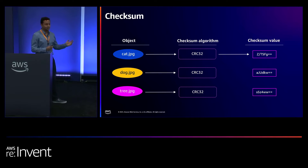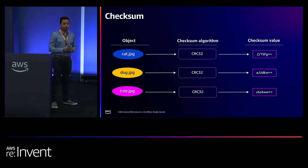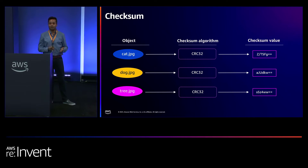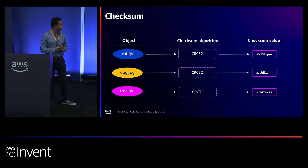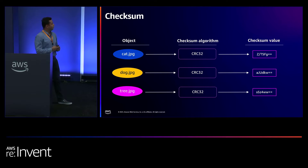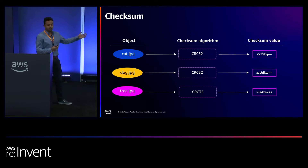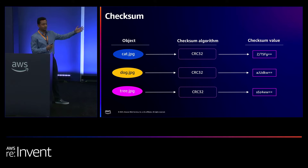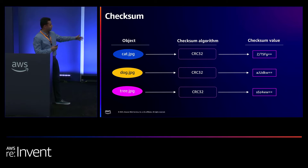What is a checksum? A checksum, or hash as some of you might commonly call it, is a unique alphanumeric representation of the contents of an object. We apply a checksum algorithm — in this case a CRC32 — onto the contents of an object to get the checksum value, giving three unique values for all of your different objects.